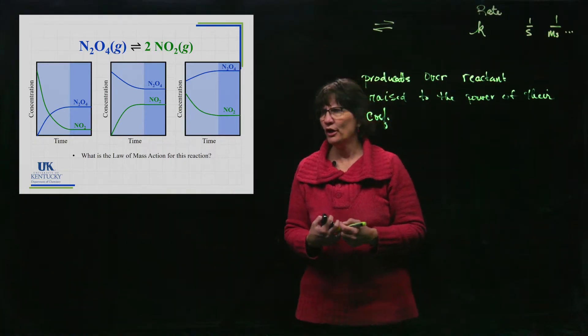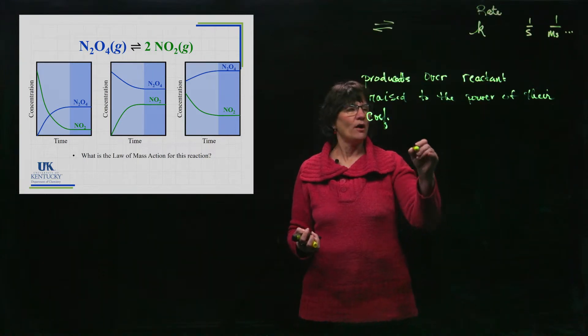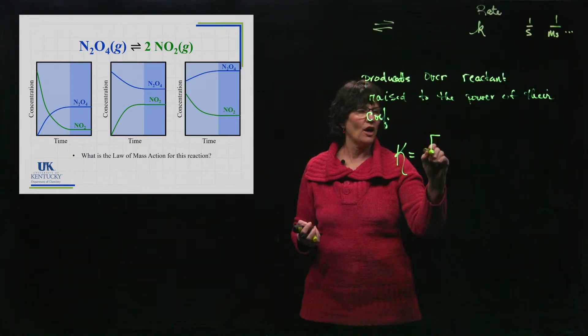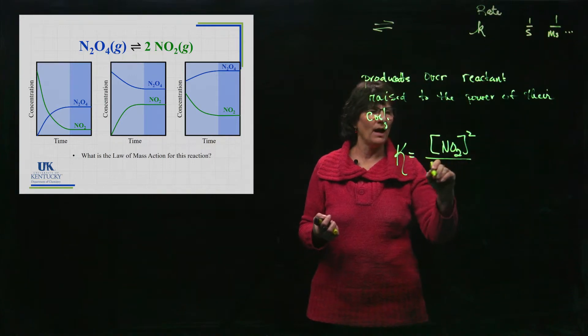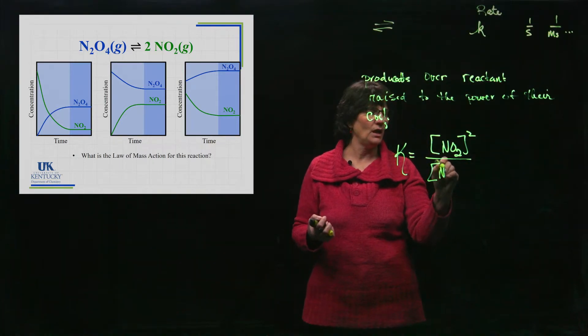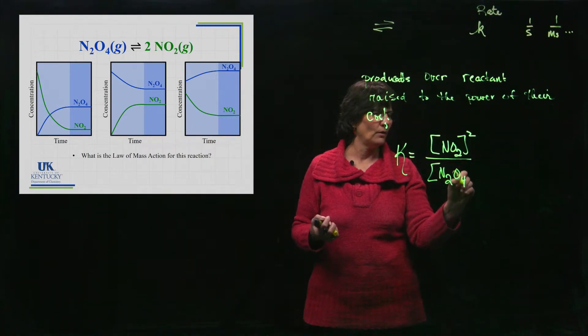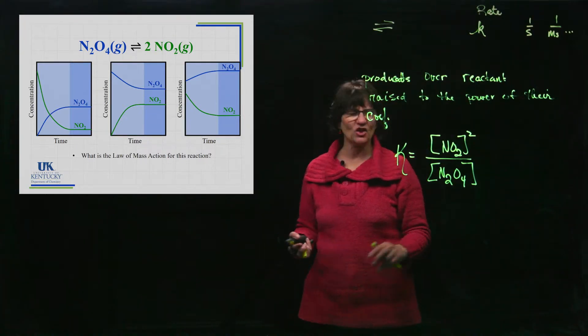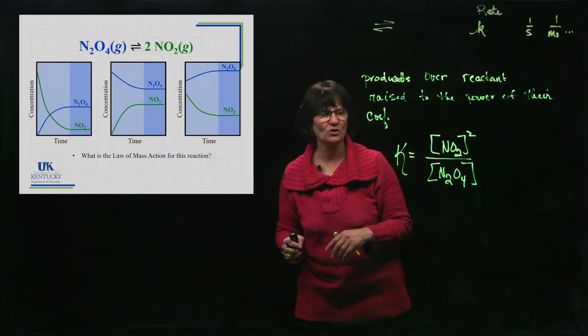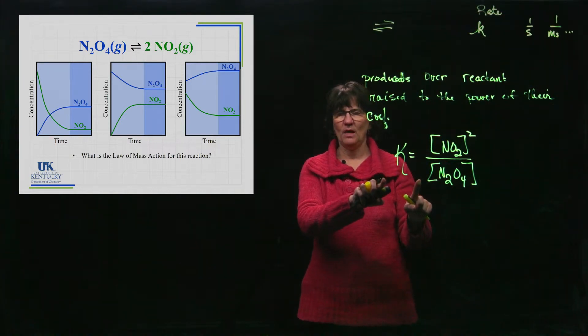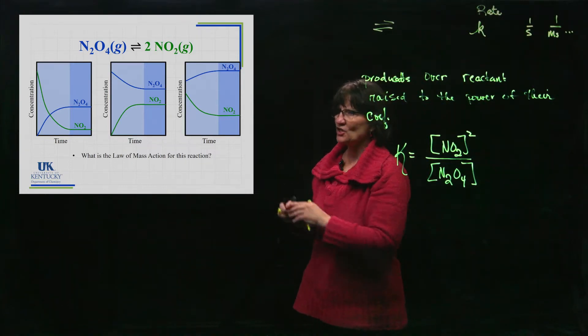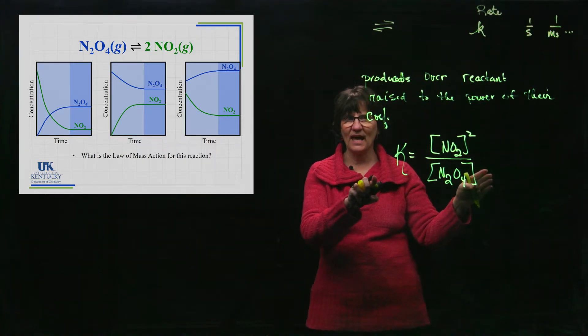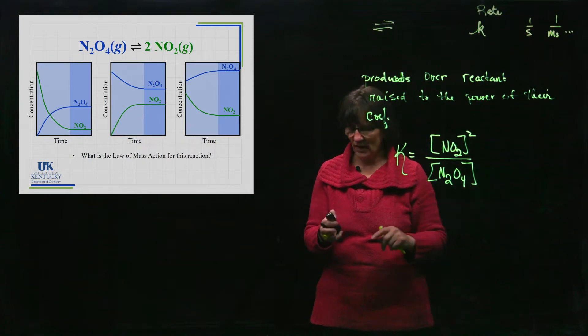So for all of these, while they don't look like they have anything in common, what would be the law of mass action for this reaction? Write that down in your notes. Law of mass action would be the equilibrium constant is equal to the concentration of NO2 squared divided by the concentration of N2O4. You might say, well this is a reversible reaction, how do I know which is my reactants or which is my products? This expression has to be paired with the way you write the reaction.